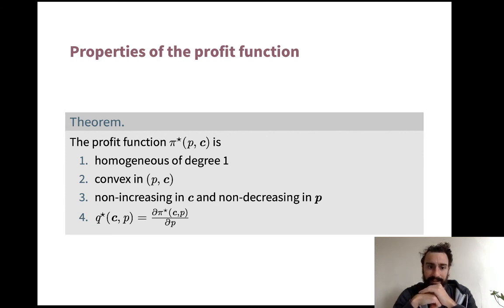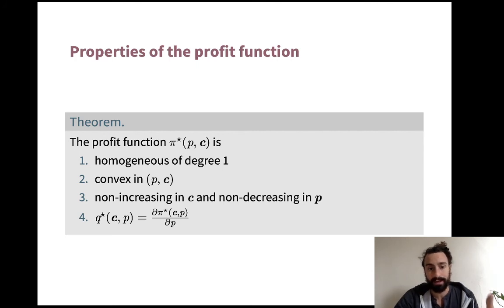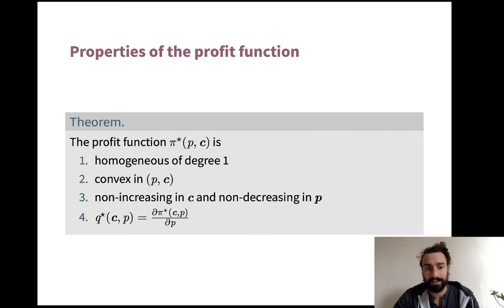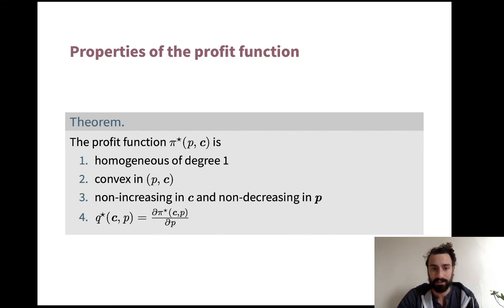The second property is that profit is convex. We had the expenditure minimization function was concave — you could optimize when one good got relatively cheaper and lower your cost compared to the linear translation. Here we have essentially the dual of that: it's convex in its arguments. We're doing a maximization problem, not minimization, so that makes sense. The intuition is the same: if relative prices or input costs change, you could optimize but you don't have to.